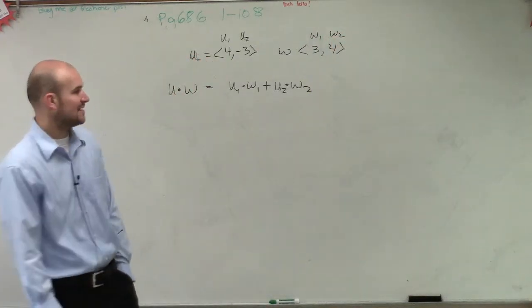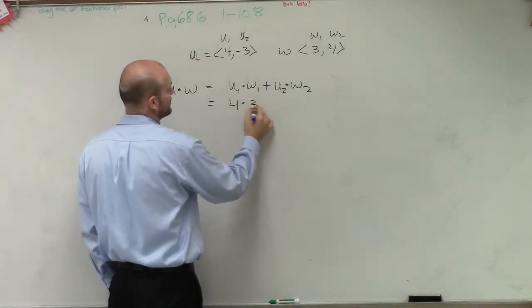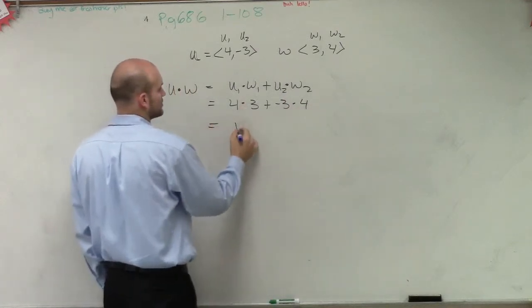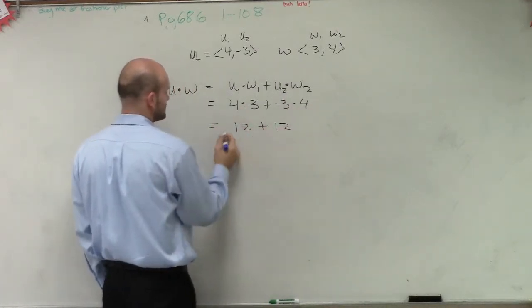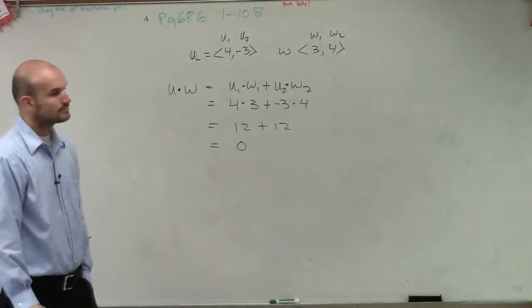So what we have here is 4 times 3 plus negative 3 times 4, which equals 12 plus negative 12, which equals 0.